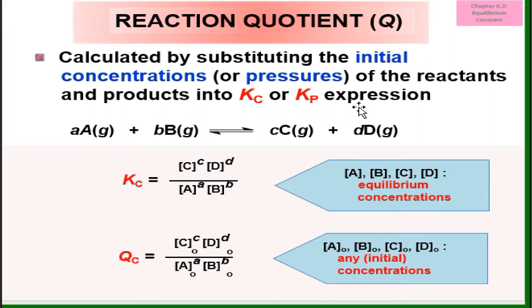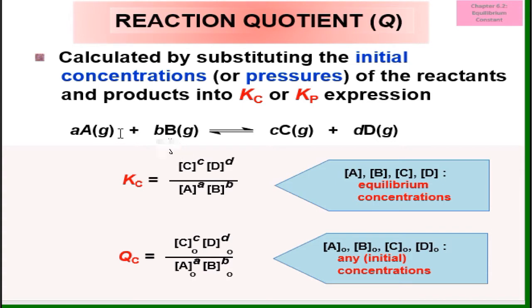The concept for Q is exactly the same as Kc and Kp — it means product over reactant. It can be concentration or can be partial pressure, depending on the question. If Kc, use concentration: concentration of C to the power of c, times concentration of D to the power of d, over concentration of A to the power of a, times concentration of B to the power of b.